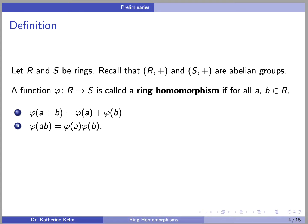Let R and S be rings. Recall that R and S are actually abelian groups if we only consider the addition. A function phi from R to S is called a ring homomorphism if, for all A and B in R, phi(A + B) = phi(A) + phi(B), and phi(A · B) = phi(A) · phi(B), where the operations on the left are in R and those on the right are in S.